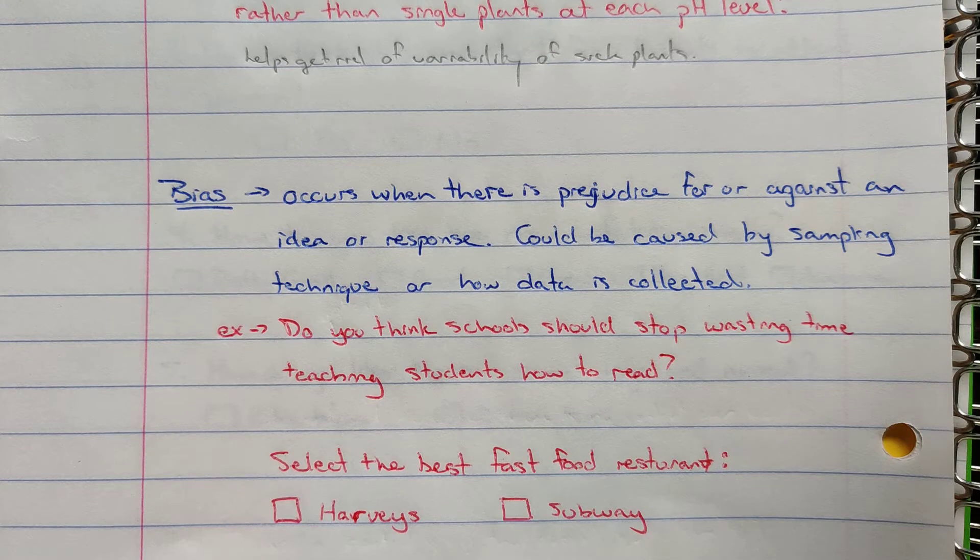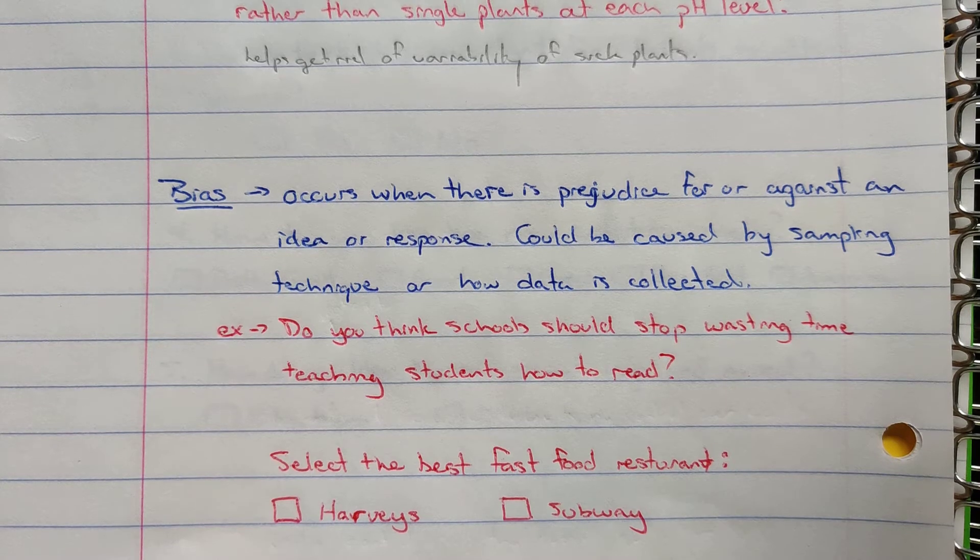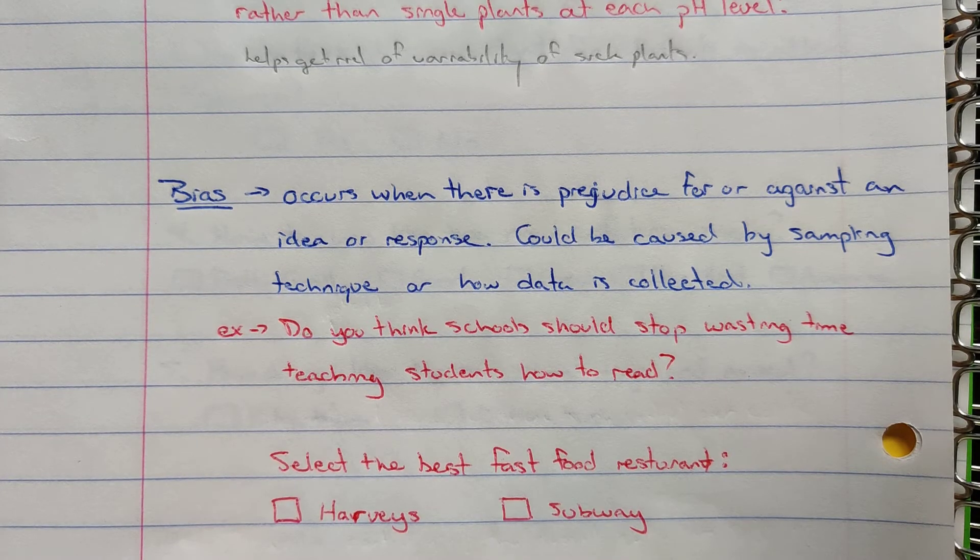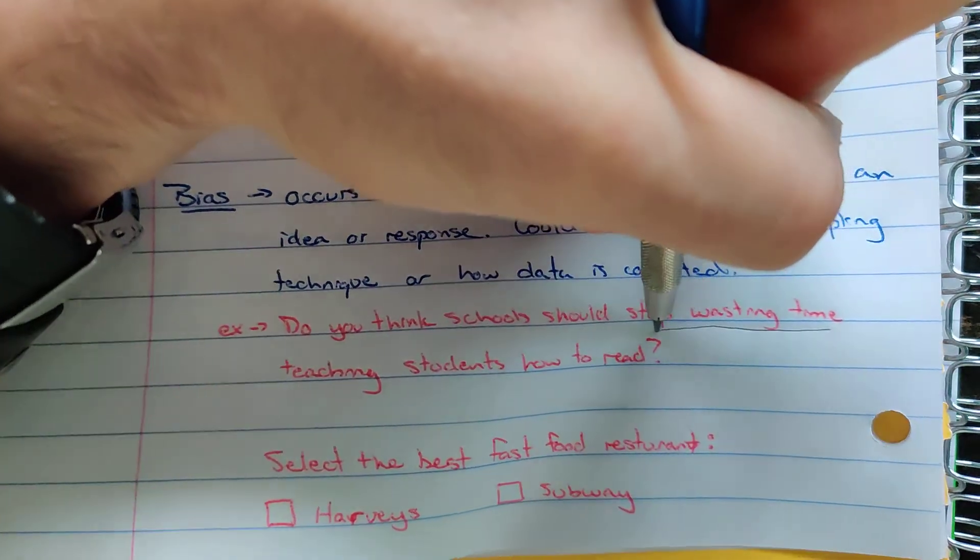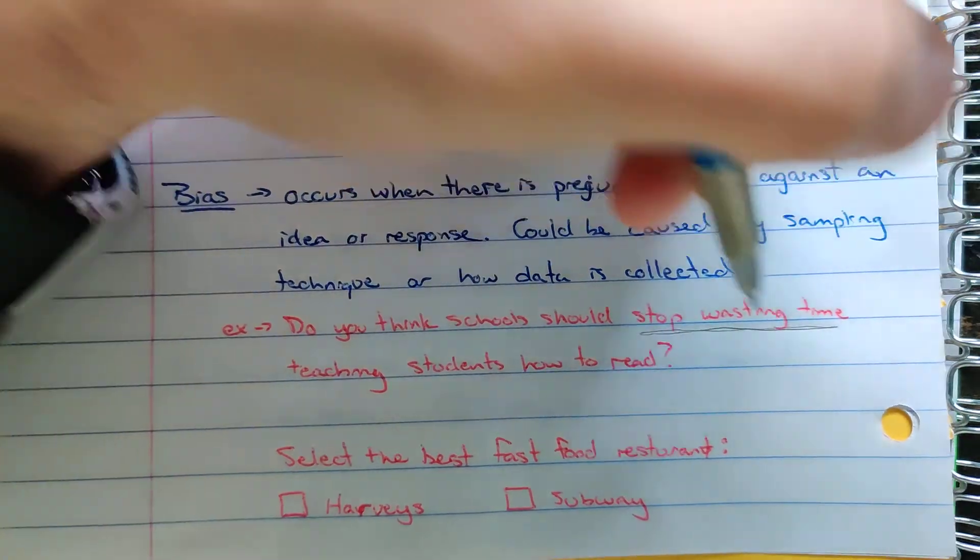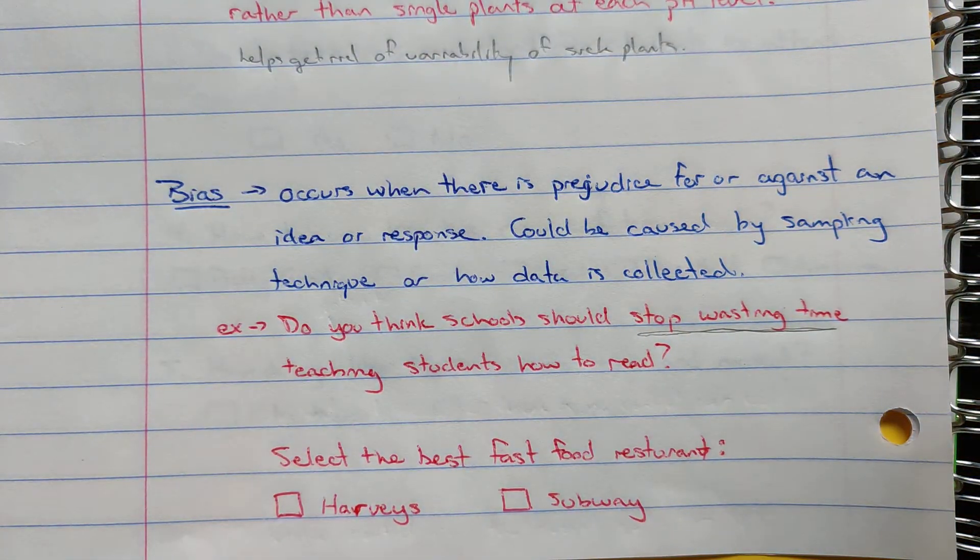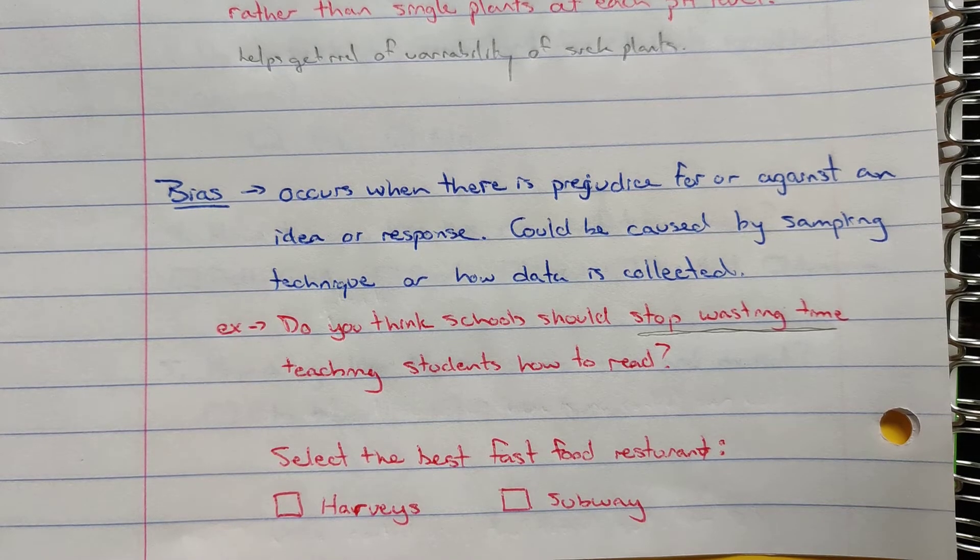You could also look at how the data is collected. A question like, do you think schools should stop wasting time teaching students how to read? Right there the question is biased because we are including the term 'wasting time.' We should stop wasting time.